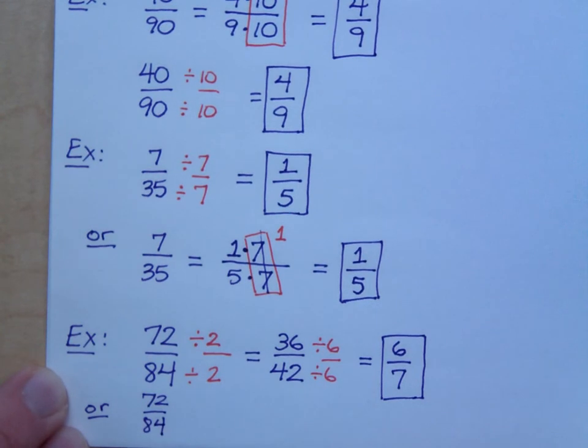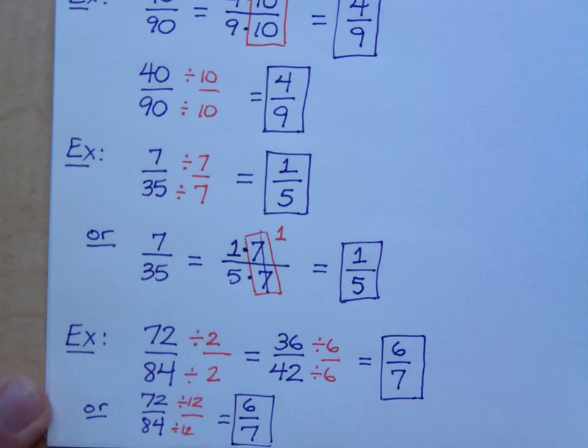So if I divide each of these guys by 12, 72 divided by 12 is 6, and 84 divided by 12 is 7. But did you have to know that 12 was the greatest common factor? No. You can do this piece by piece.